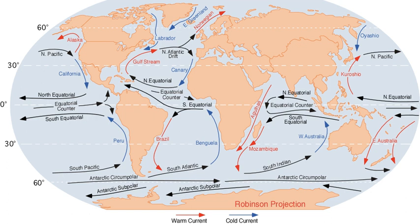Deep ocean currents are driven by density and temperature gradients. Thermohaline circulation is also known as the ocean's conveyor belt, which refers to deep ocean density-driven ocean basin currents. These currents, called submarine rivers, flow under the surface of the ocean and are hidden from immediate detection. Where significant vertical movement of ocean currents is observed, this is known as upwelling and downwelling. Deep ocean currents are currently being researched using a fleet of underwater robots called Argo.